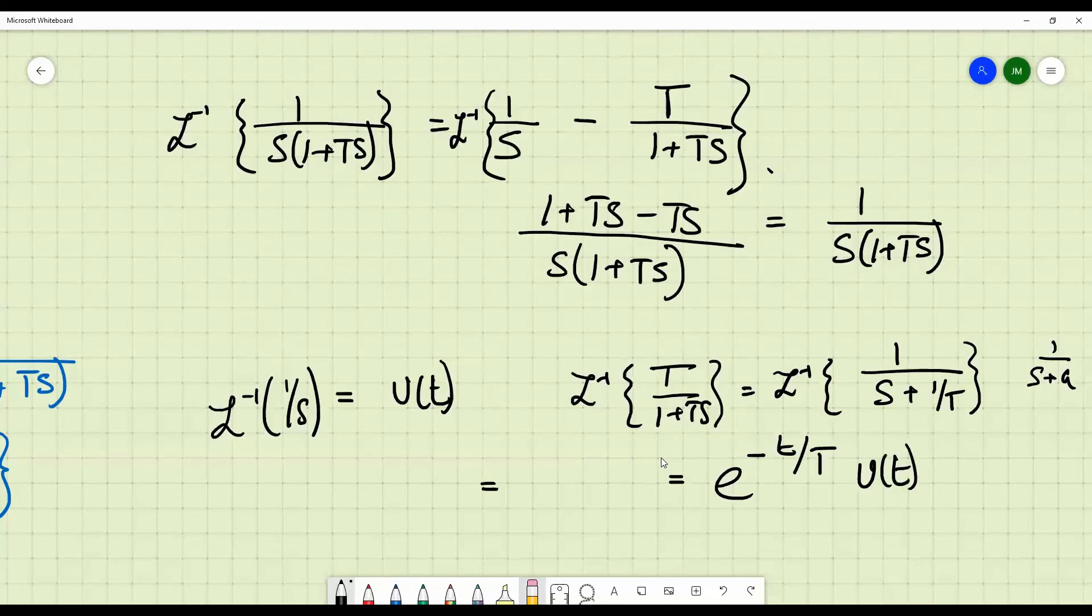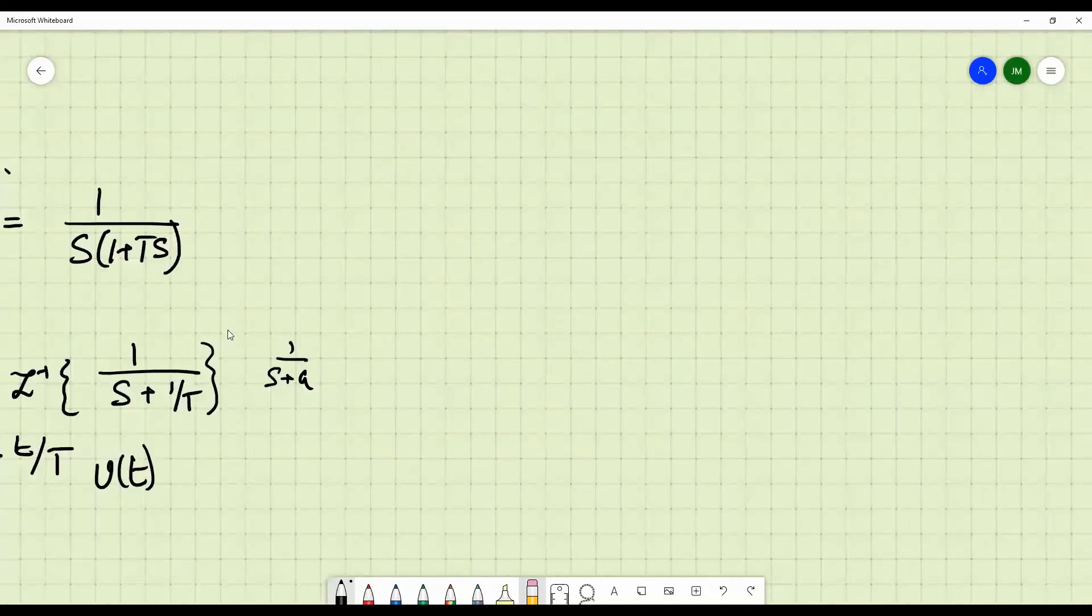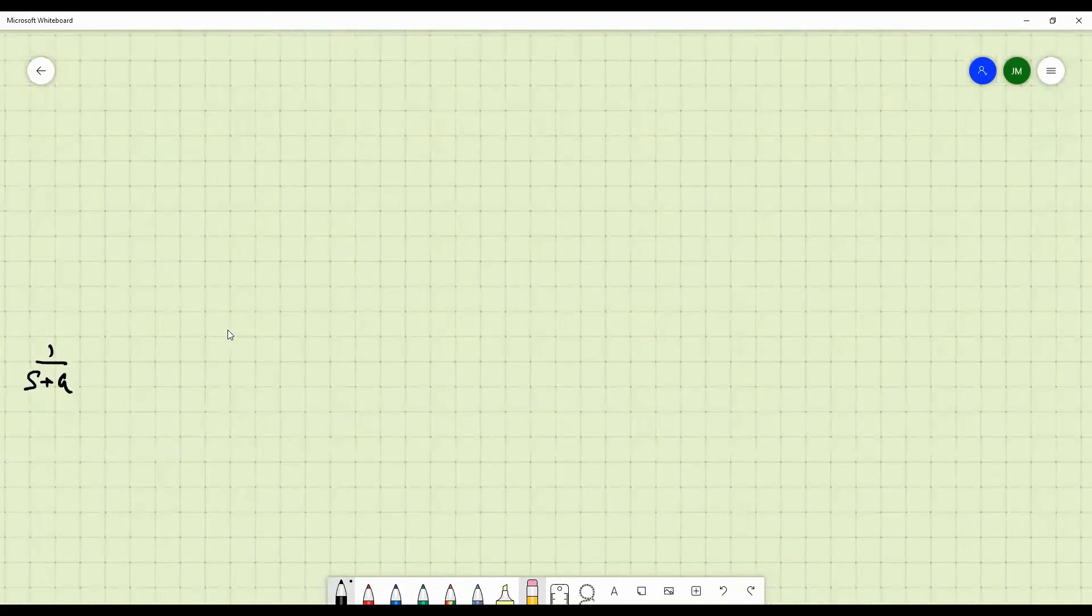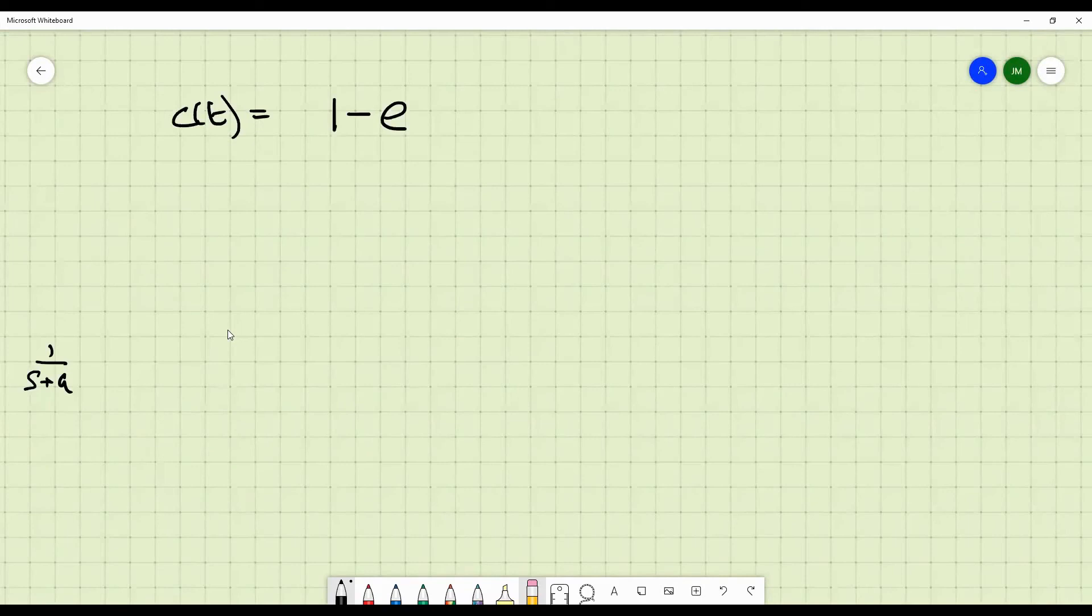So if you combine this and this with the negative sign, what you are getting is the step response of a first order system. So, this is R of T. C of T is equal to 1 minus E power minus T by T into U of T.